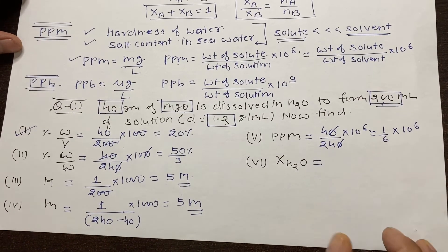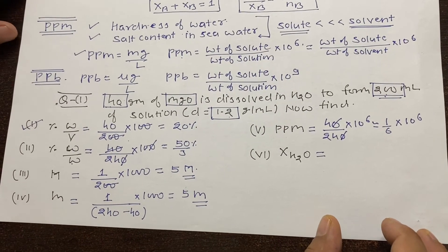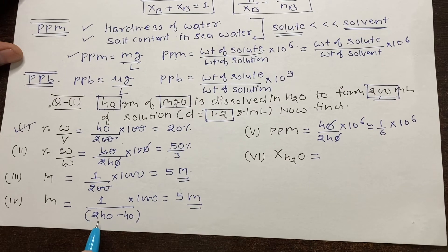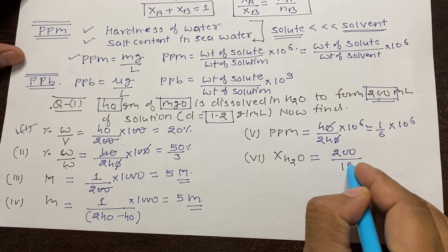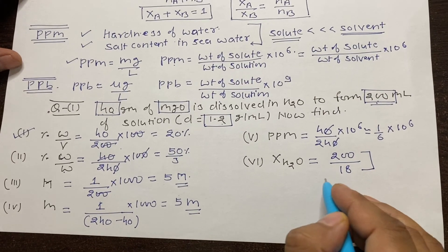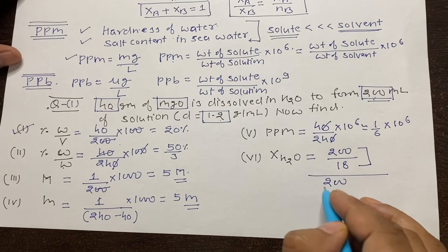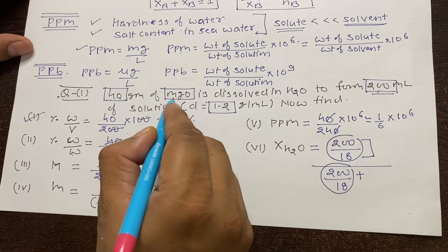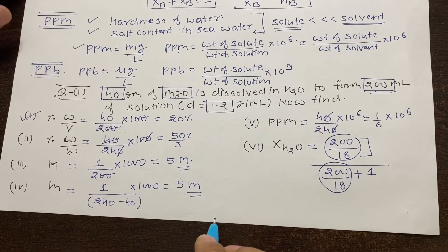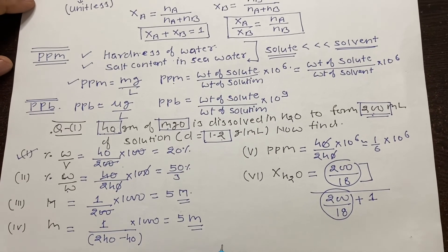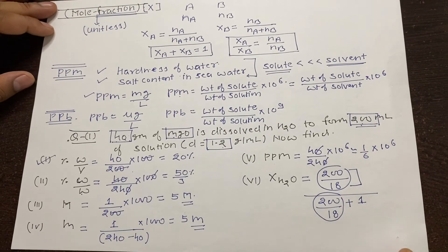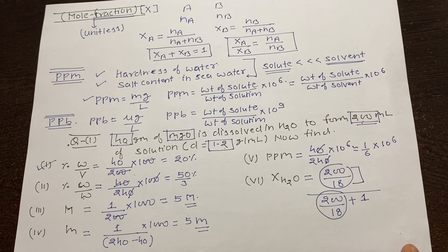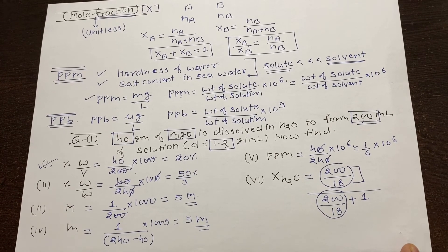For mole fraction of water (solvent): mass of solvent is 200 grams, so moles of water = 200/18. Mole fraction of water = (200/18) / (200/18 + 1), where 1 is the moles of MgO. By calculating this we can find the mole fraction. In the next video, we will relate all concentration terms with each other and solve problems typically asked in IIT or NEET examinations.